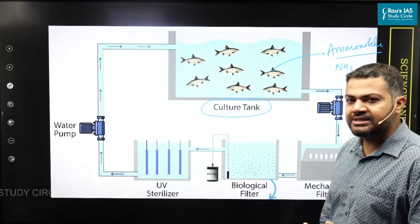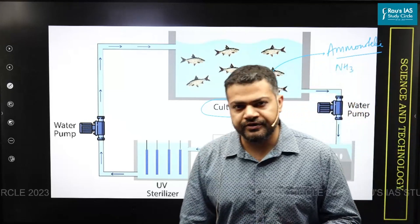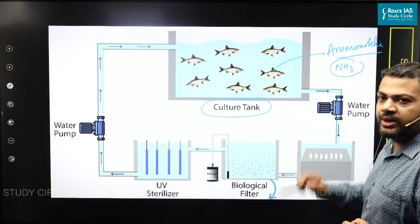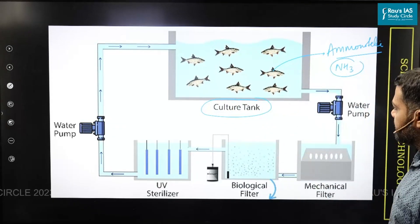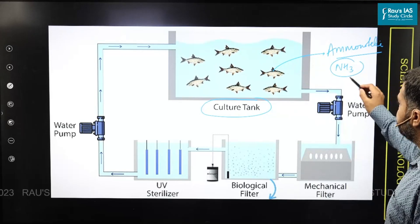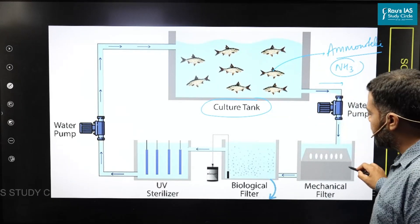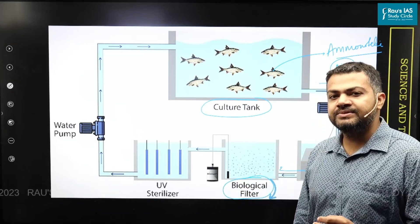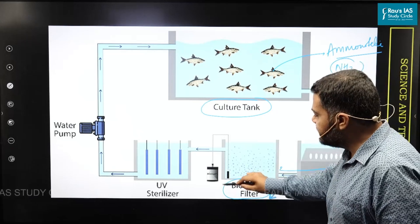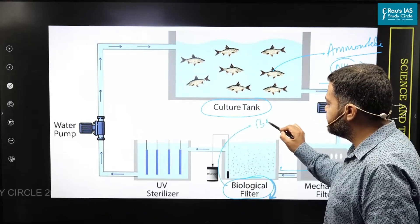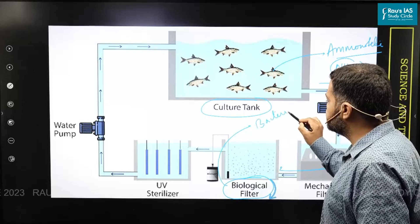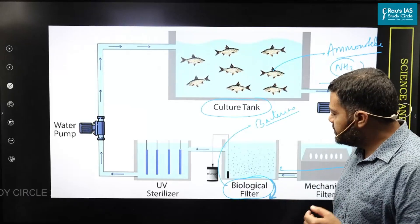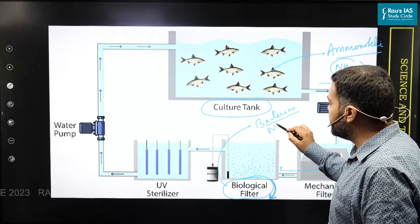This ammonia, because it's a waste, is definitely harmful for the fish. A fish cannot survive in ammonia, so this ammonia has to be treated away. In aquaculture systems, we take this ammonia-rich water and make it pass through a series of biological filters. As the name says, biofilters or biological filters are basically bacteriological filters. This process we call nitrification.